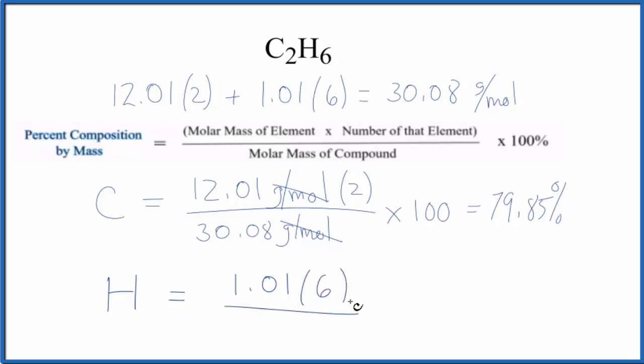We divide that by the molar mass of the compound, multiply by 100, and we get 20.15%.